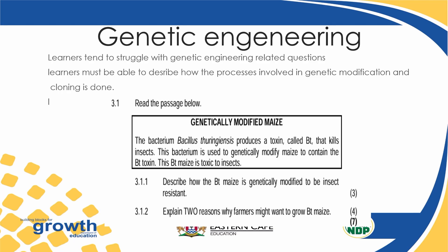Let's look at this question. It says: read the passage below — Genetically modified maize. The bacterium Bacillus thuringiensis produces a toxin called BT that kills insects. This bacterium is used to genetically modify maize to contain the BT toxin, making this BT maize toxic to insects. The first question asks: describe how BT maize is genetically modified to be insect resistant. A gene has been extracted and a new gene — one able to be toxic to insects — has been inserted, so that when insects feed on this maize, they get that toxin. The genes of this maize have been modified to produce plants not affected by these insects.